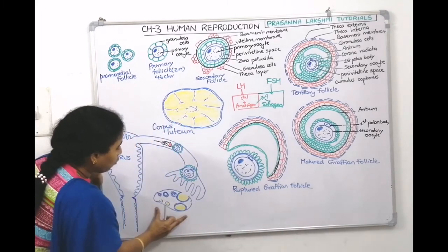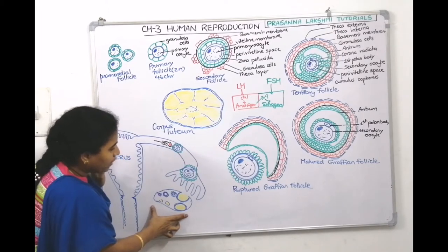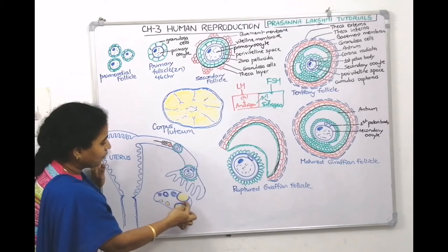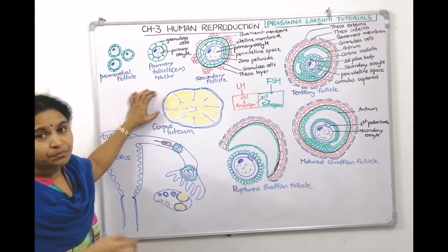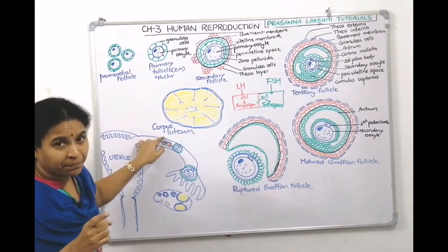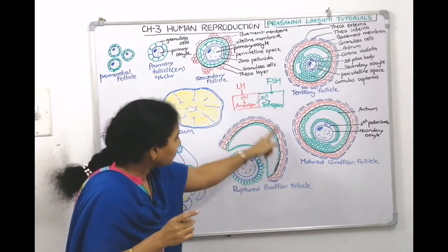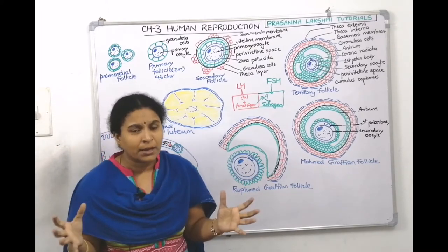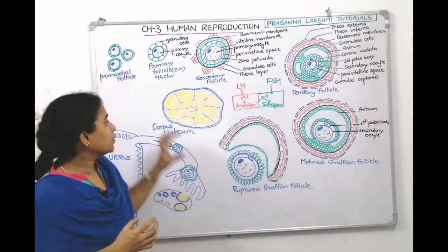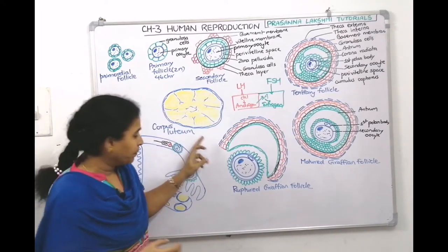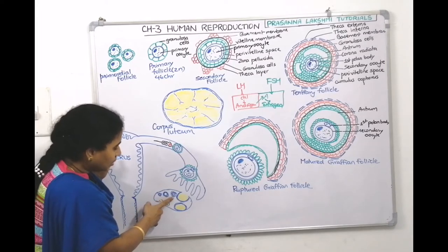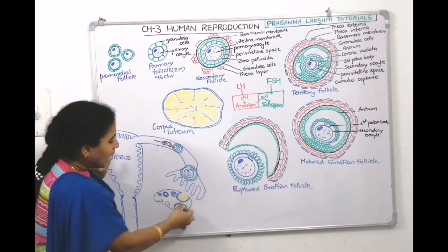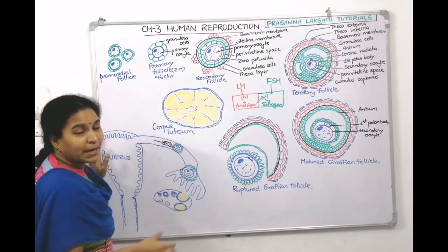The secondary oocyte with the first polar body, zona pellucida, and corona radiata comes out together — this is the ruptured Graafian follicle. This secondary oocyte is sent into the fallopian tube from the ovary. Meanwhile, the ruptured Graafian follicle remaining inside the ovary develops into a temporary endocrine tissue called corpus luteum, by deposition of lutein fatty tissue.